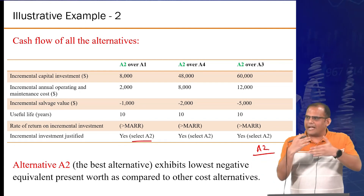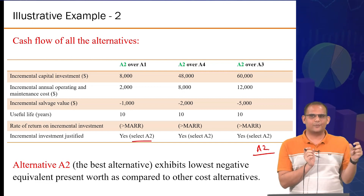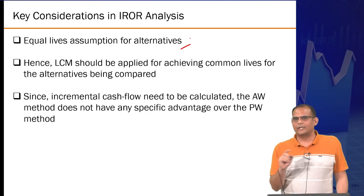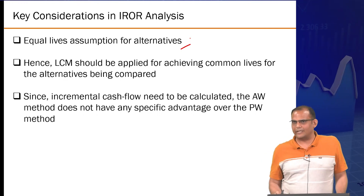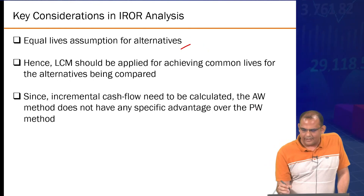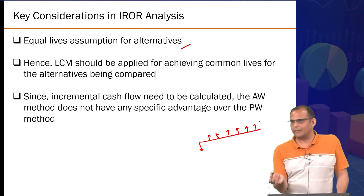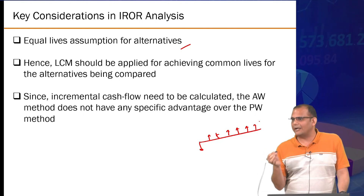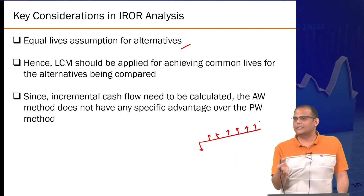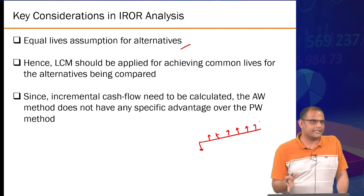This covers the IRR-related technicalities. The method is simple; when introduced formally, the language becomes cluttered. This example shows the systematic and easy way to do it. Reemphasizing: you must make the equal-life assumption because otherwise the incremental cash flow series cannot be calculated. Once you have the incremental series, it doesn't matter whether you use PW or AW — the annual worth method has no specific advantage over present worth in this particular case, because you've already taken the LCM. Whichever method you use, the rigor is the same.